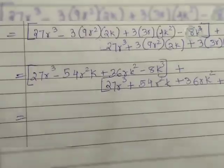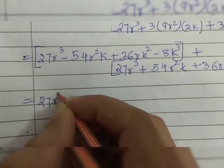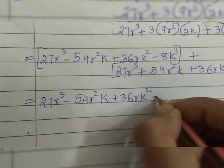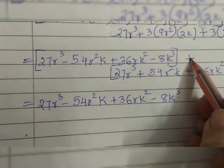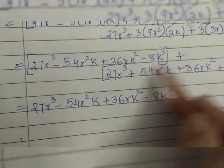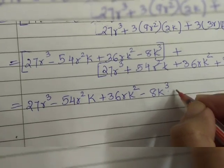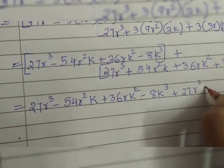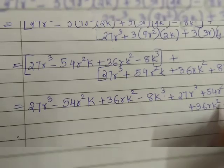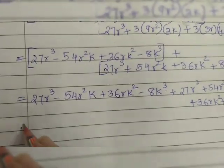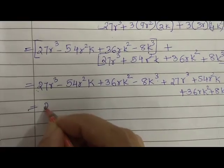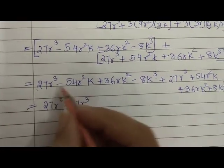Now we open the brackets. We write down all the terms from the first bracket as they are. Since we have a plus sign outside the second bracket, when we open it, all the signs inside remain the same — plus into plus gives plus. So we write: +27r³, +54r²k, +36rk², +8k³. Plus 27r³ and plus 27r³ — we write them together.